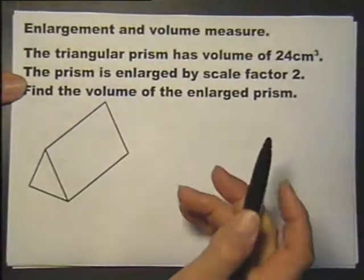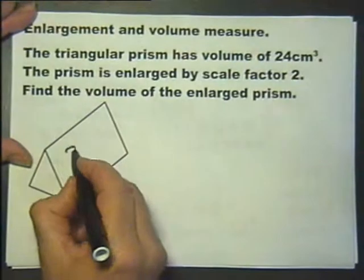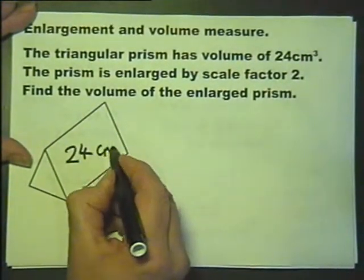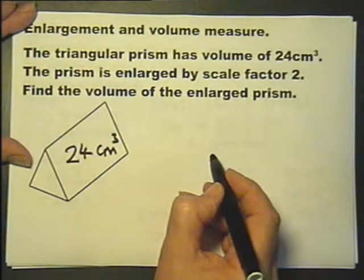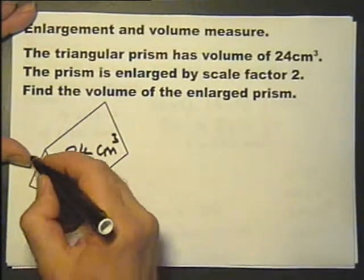However, in this question we're told the volume of this prism is 24 cubic centimetres, and it's enlarged by scale factor 2, and we're asked for the volume of the enlarged prism. We have no other dimensions.